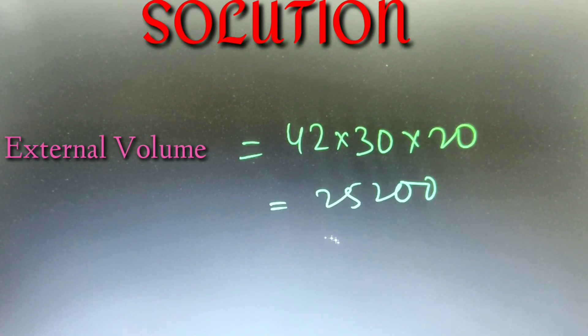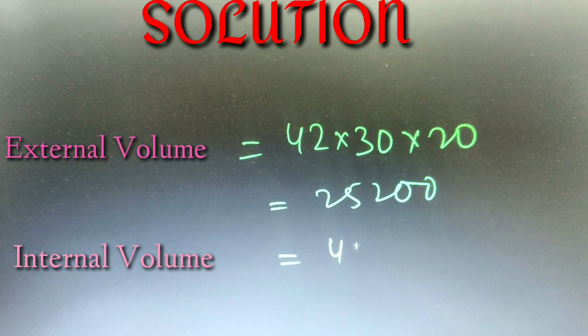Now we calculate the internal volume of the cuboid, which is 40 times 28 times 18, which equals 20,160.